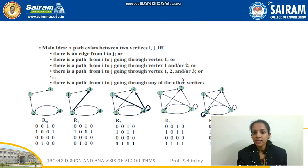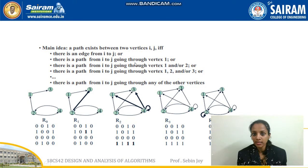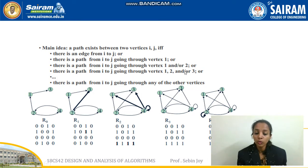The idea behind Warshall's algorithm is that a path exists between two vertices if and only if: there is a direct edge from i to j, or there is a path from i to j going through vertex 1. Then we consider paths through vertices 1 or 2, then 1, 2, or 3, and so on until we find all paths.